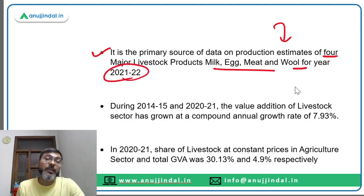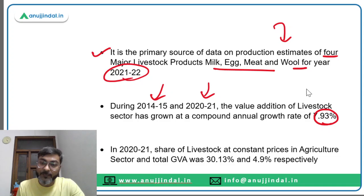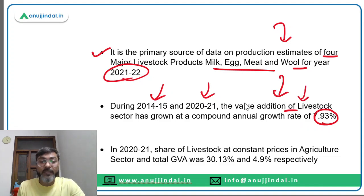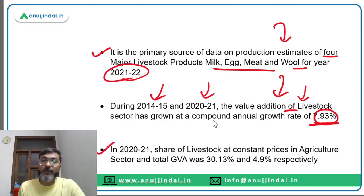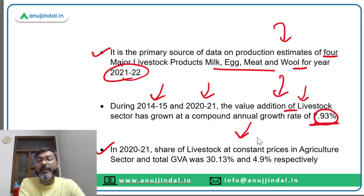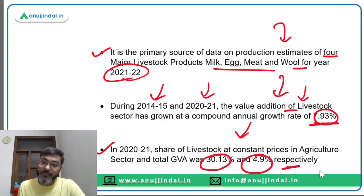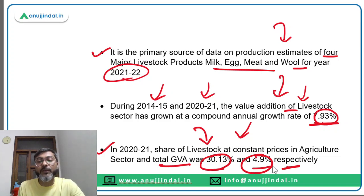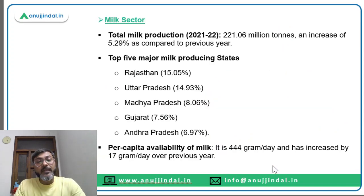There was a compound annual growth rate of 7.93 percent during 2014-15 to 2021 in the value addition of the livestock sector. In 2020-21, the share of livestock at constant prices in the agriculture sector and total GVA (Gross Value Added) was 30.13 percent and 4.9 percent respectively.